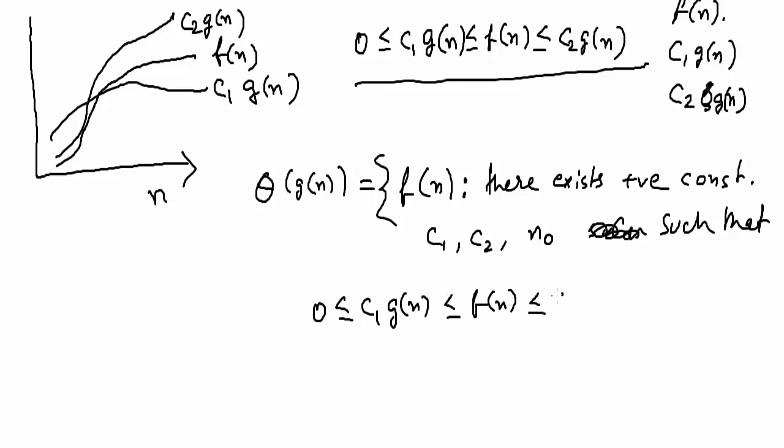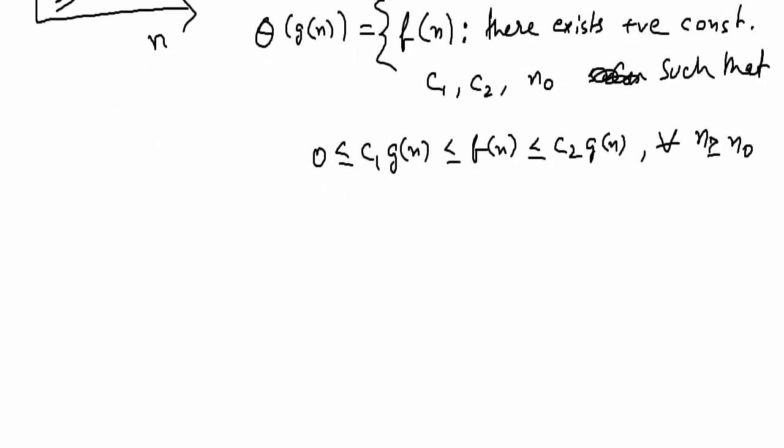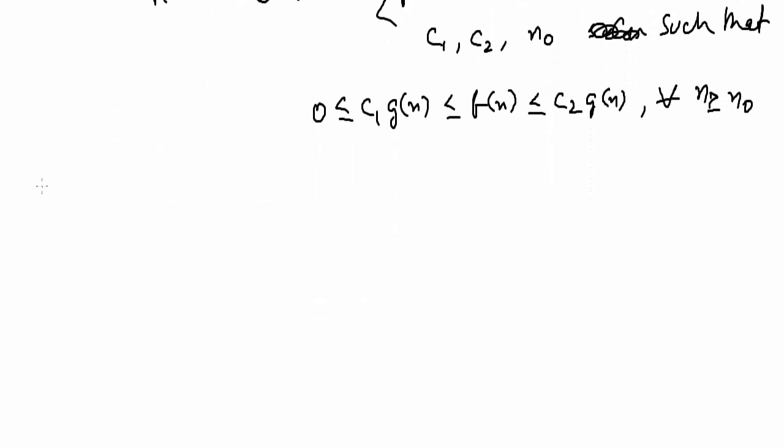I am writing it once again. This is valid for all n greater than n0. I will explain this with the help of an example. I have already taken this 3n plus 2. Now we need to prove it to theta of n.